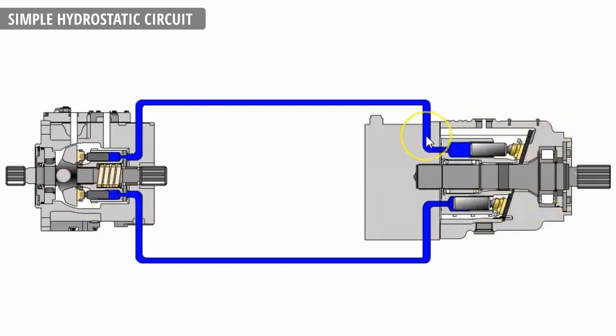On the other side there is an axial piston motor. Between pump and the motor we have two pressure lines, which complete the whole closed loop system.